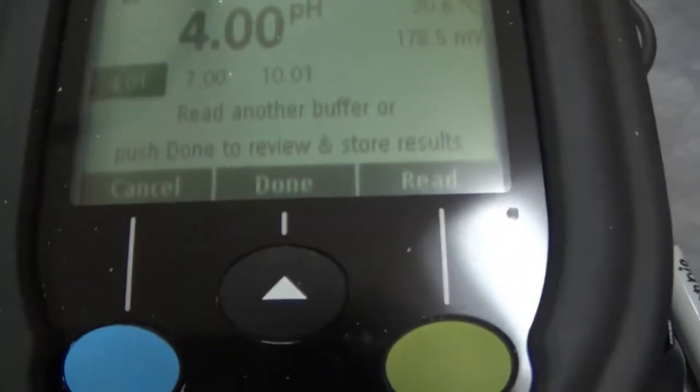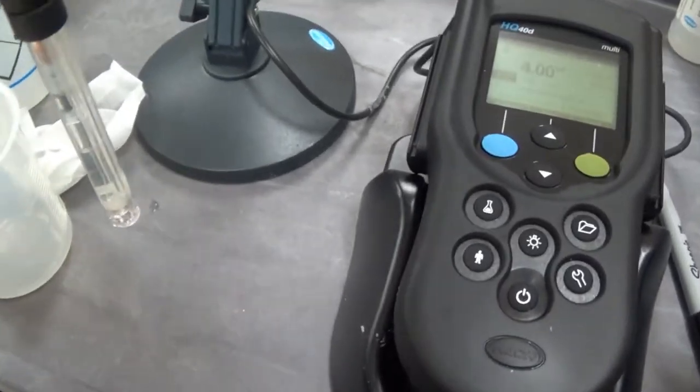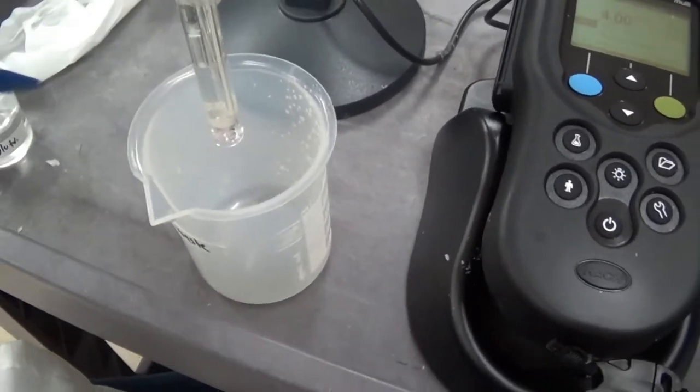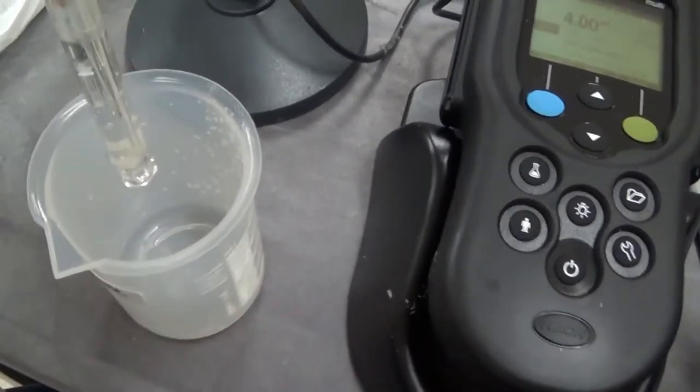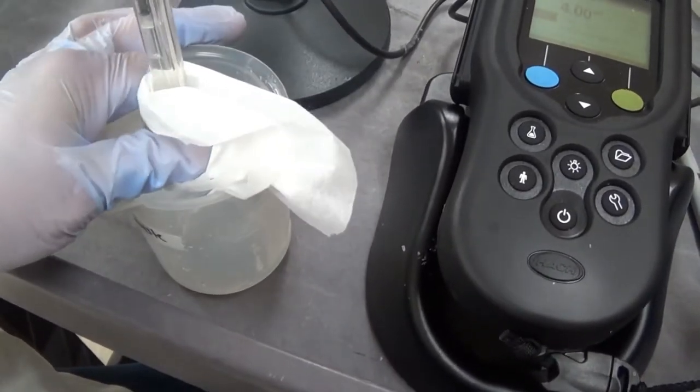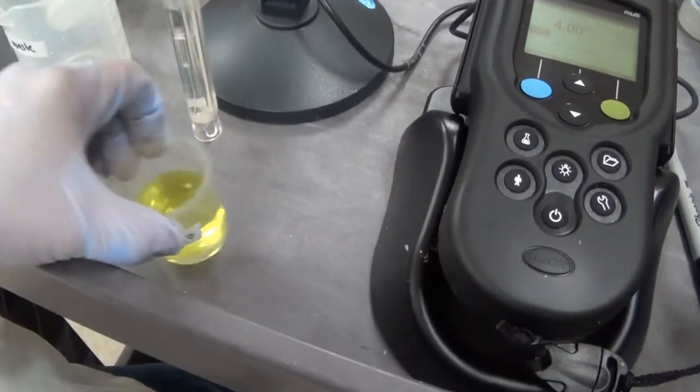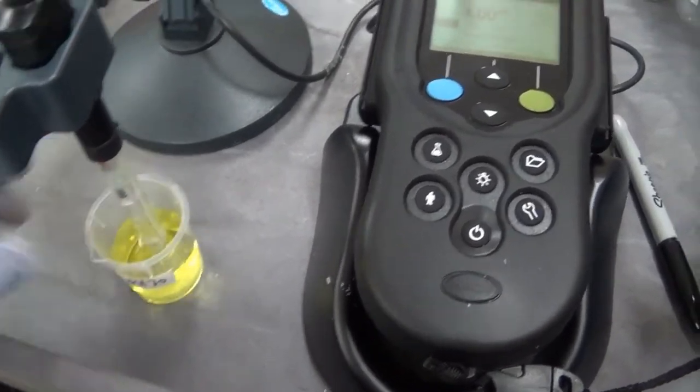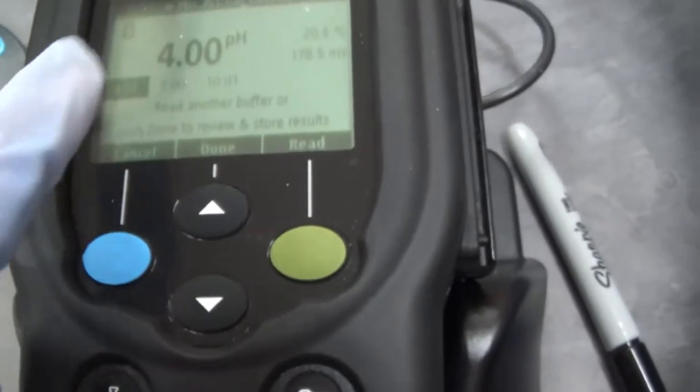Read another buffer or push done to review and store results. We are going to do all the buffers so we can have the entire pH range ready to go. If we were only going to do a pH of 4 and pH of 7, we would want to have only acidic test samples. But we are going to be prepared for all of them.